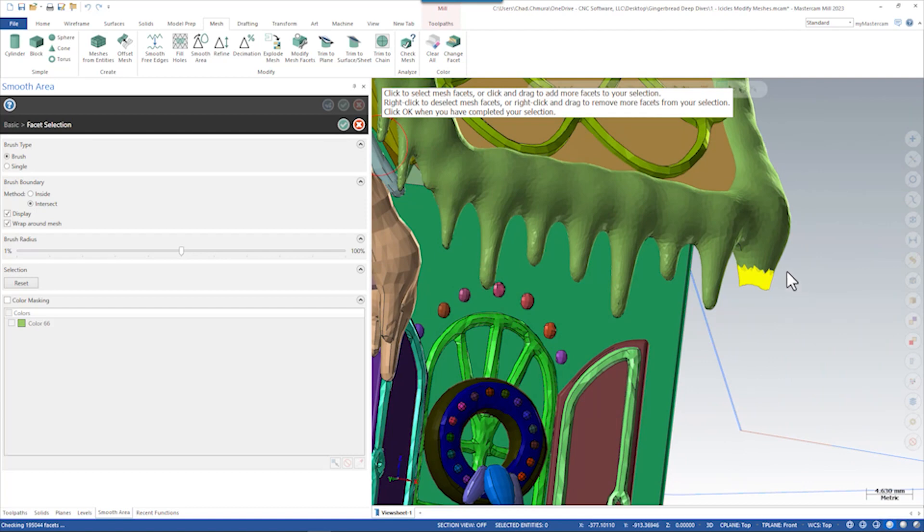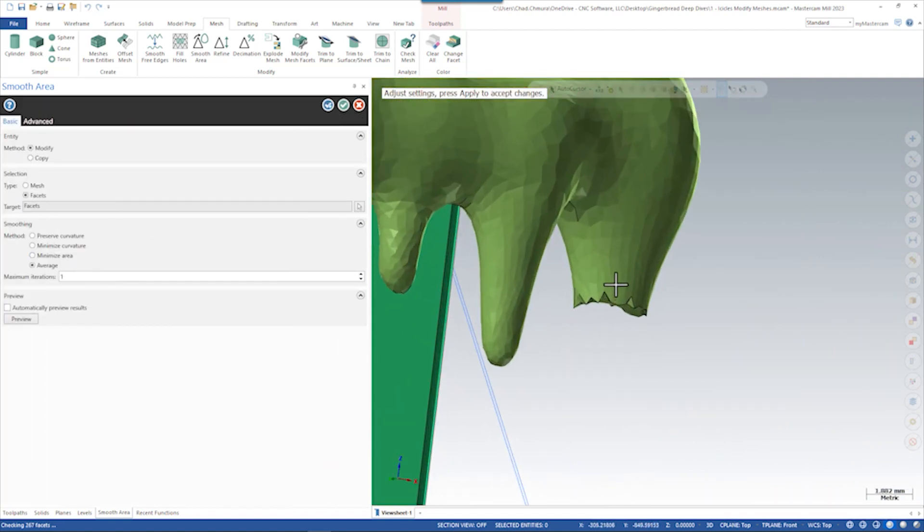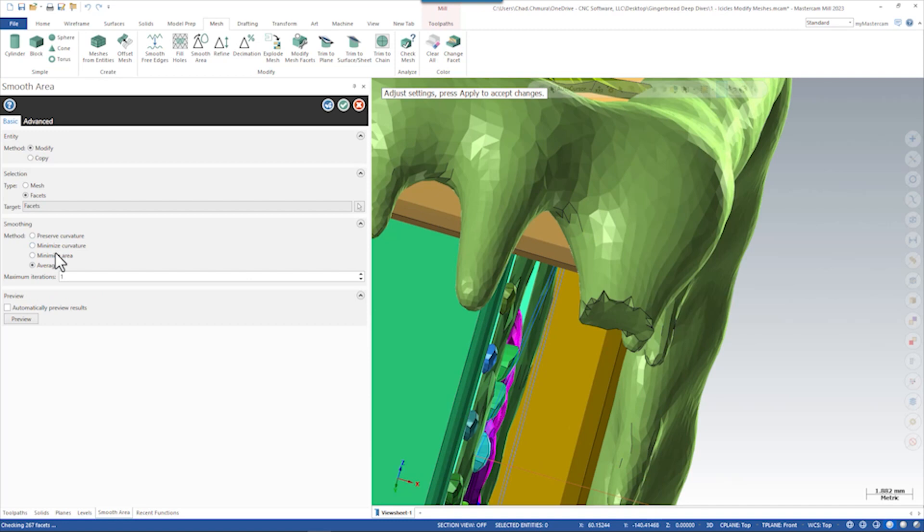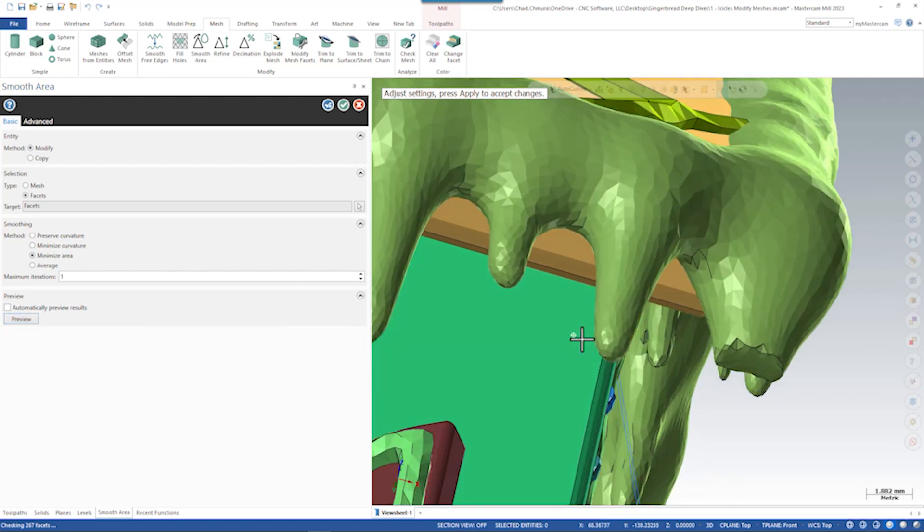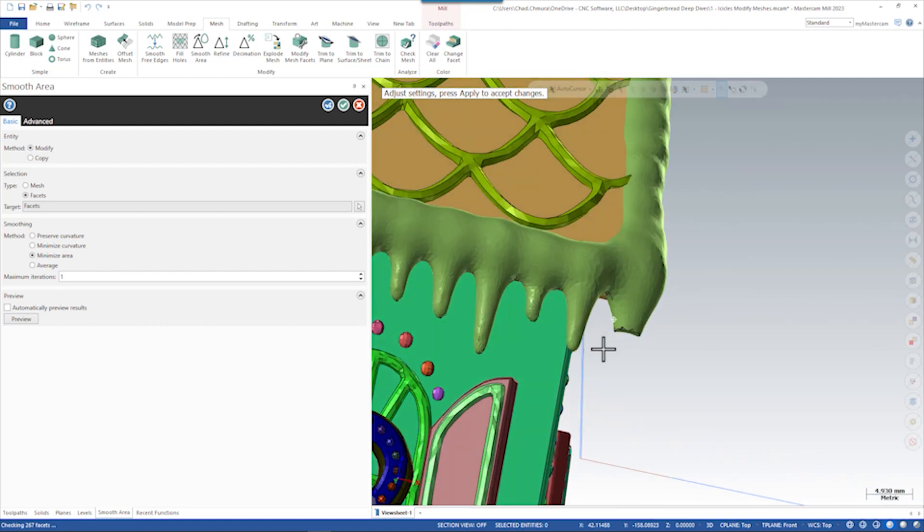Let's see what the smoothing algorithm gives us. Right now average appears to not do a whole lot because we really want to try to aggressively smooth this model. If we tried minimize area, for example, minimize area tends to be a little more aggressive and you can see it did start to add a little bit of a radius here. What we can do is run multiple iterations of that smoothing algorithm to see how much farther back we can smooth this.